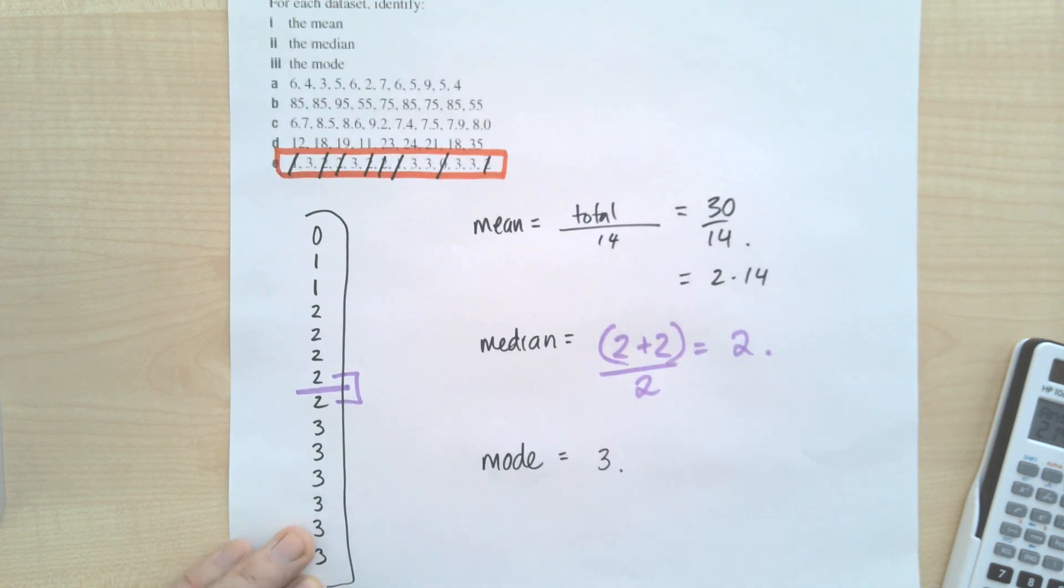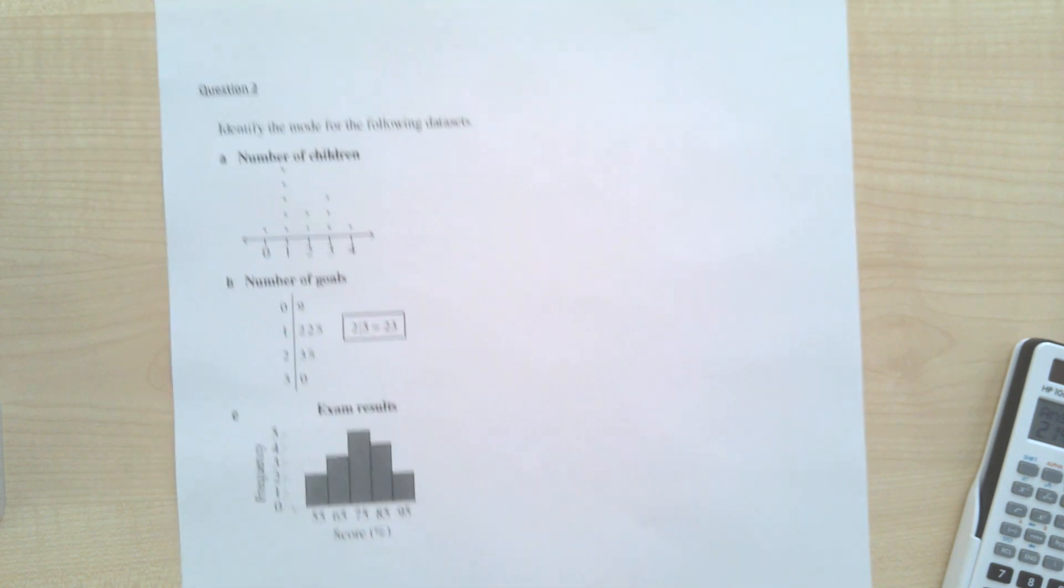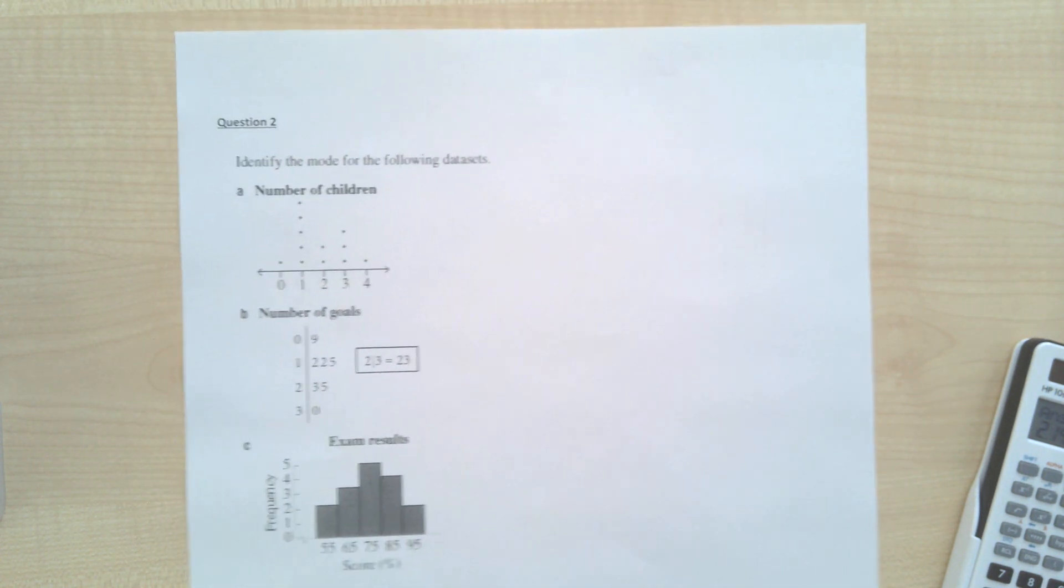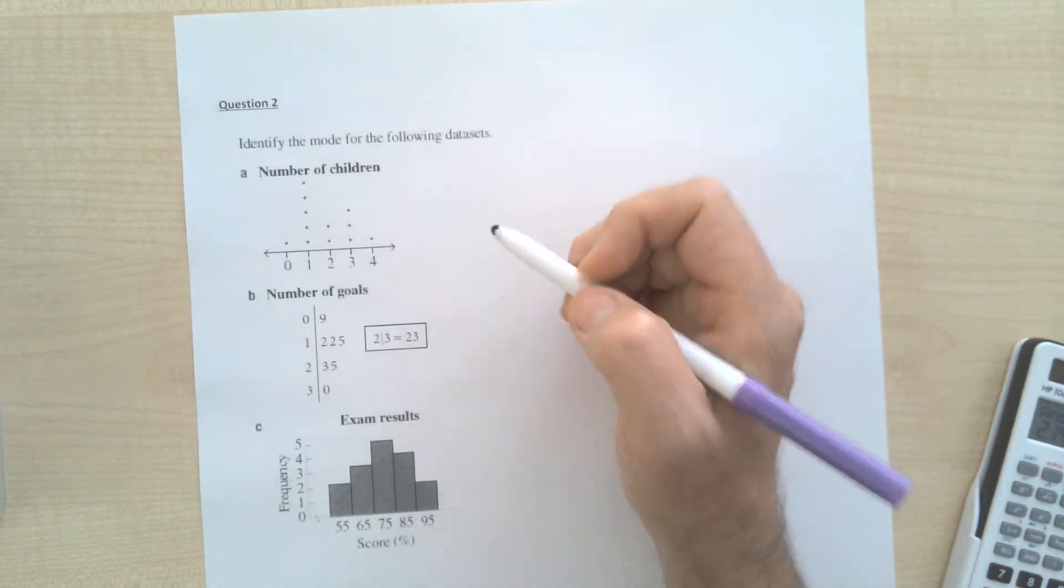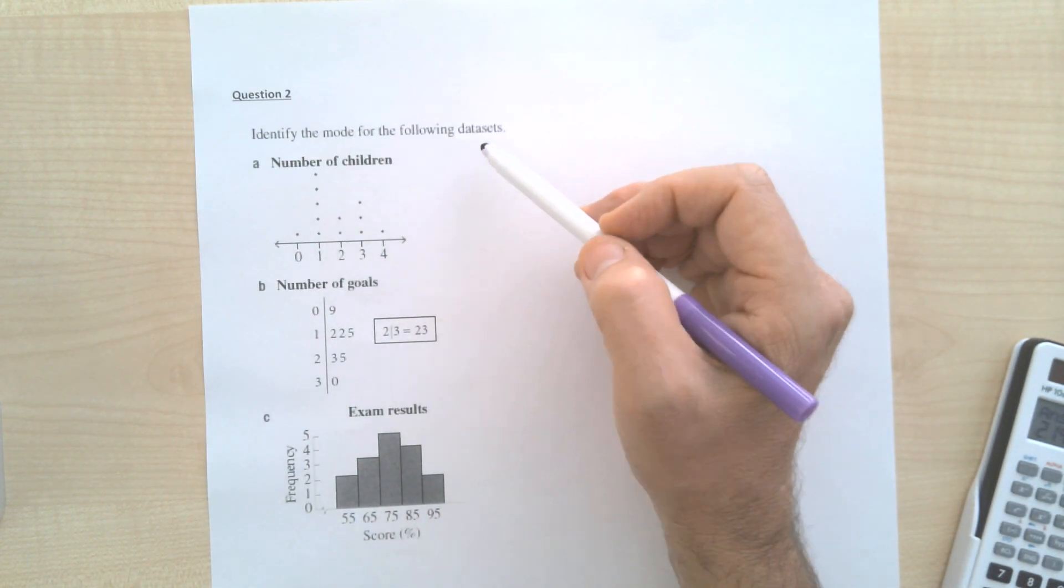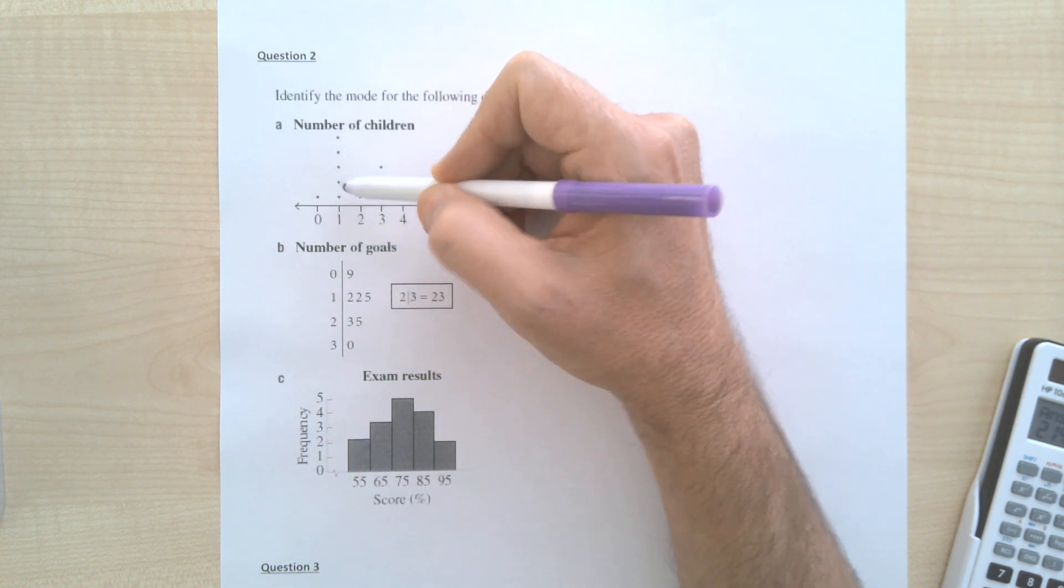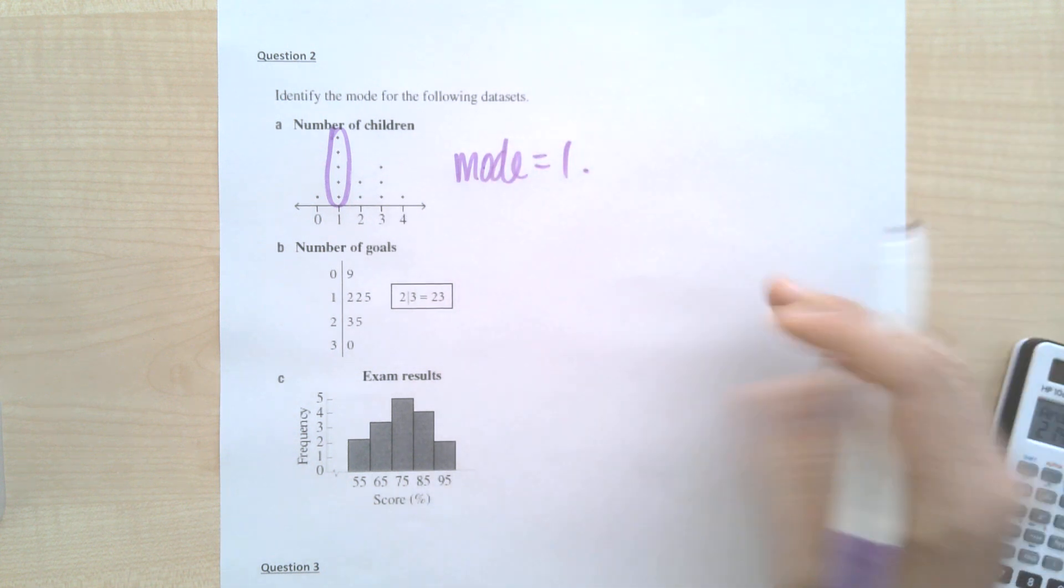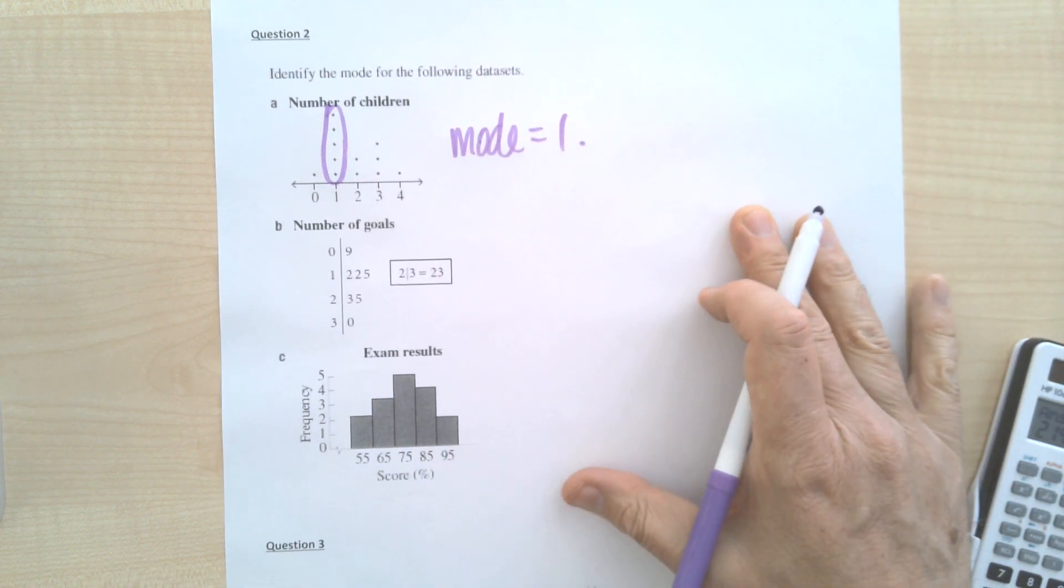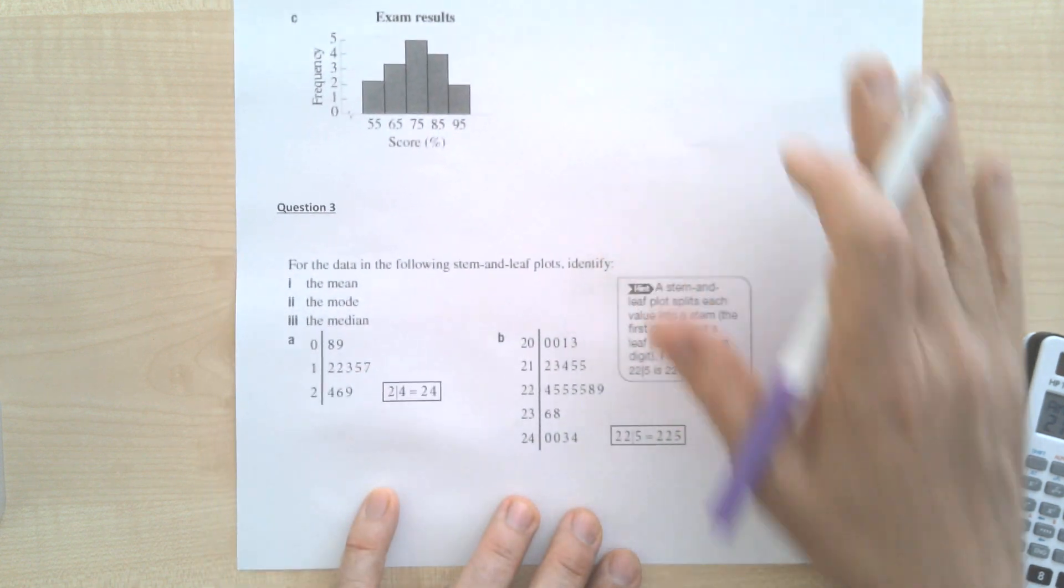Alright, so that's how you do that just from some data. But if you look at the next page, we've got this kind of stuff. So this one's pretty simple. Identify the mode from the following data sets. So this one occurs the most often. The mode is one. Just looking at the one that occurs the most often. That's a no brainer.